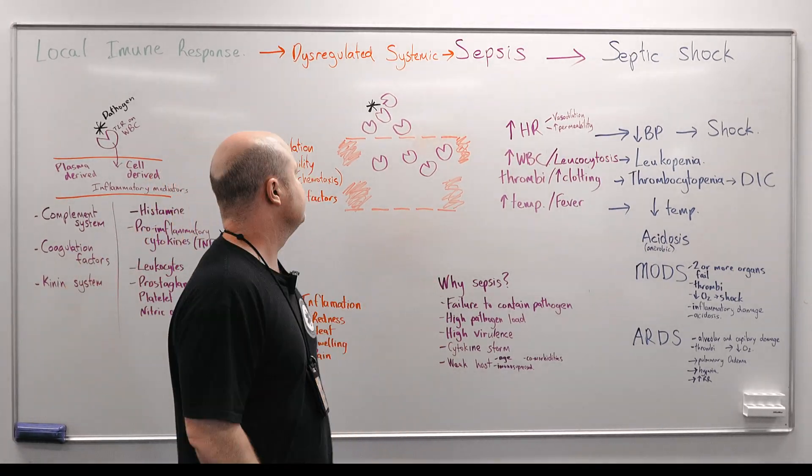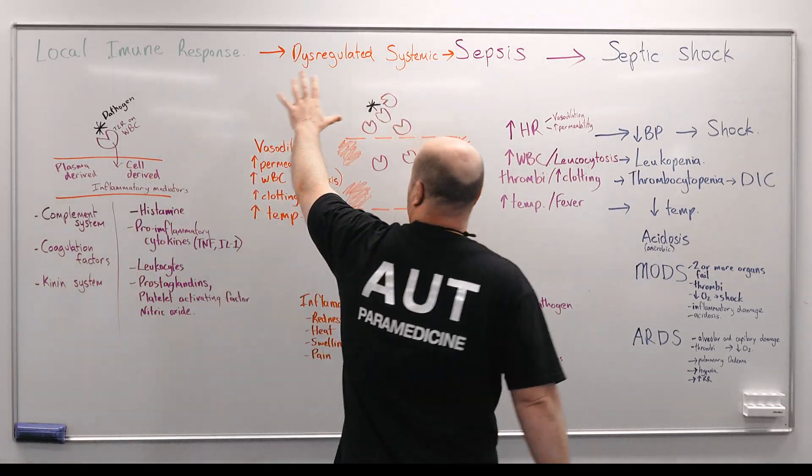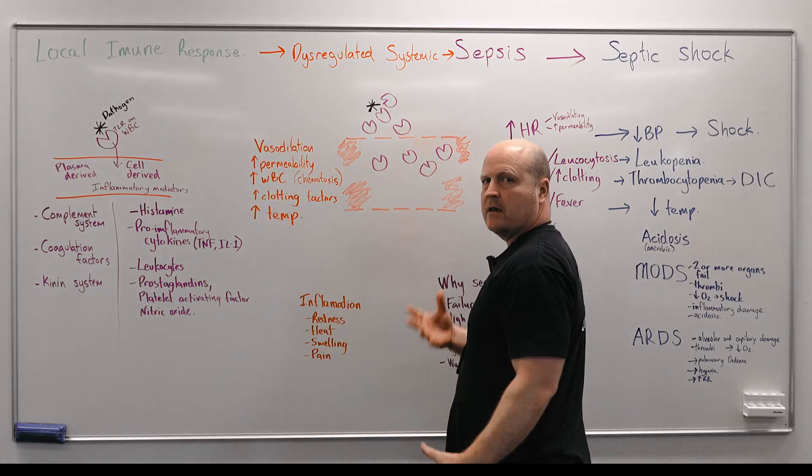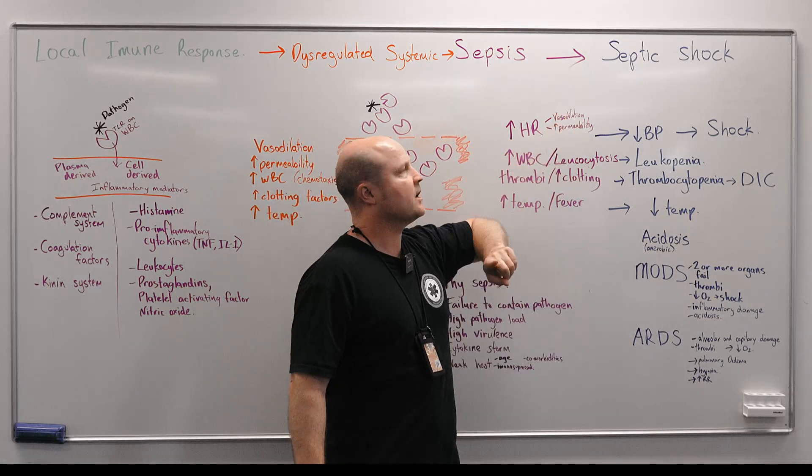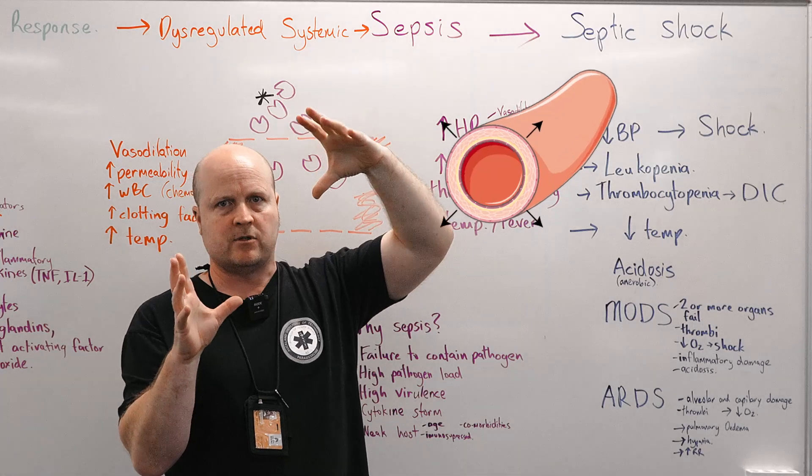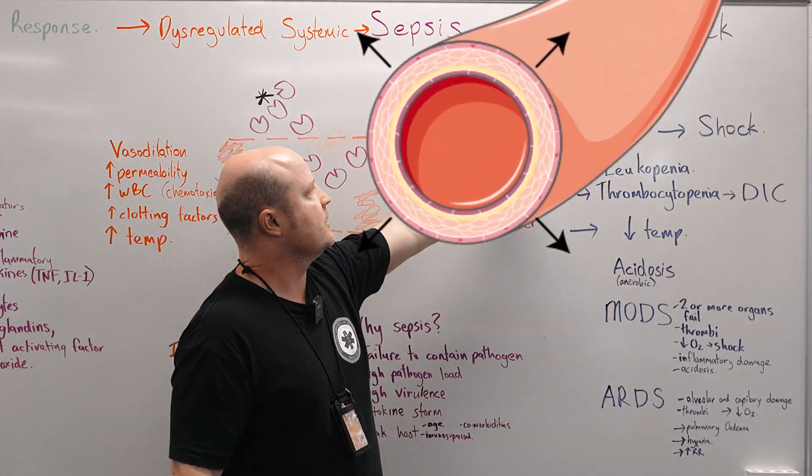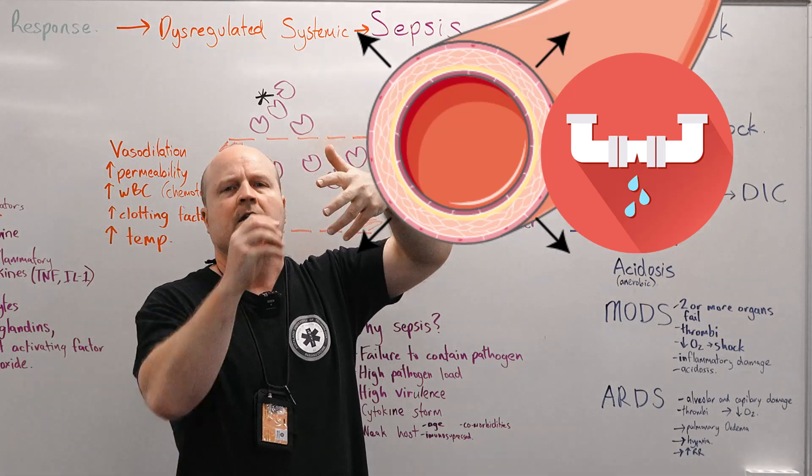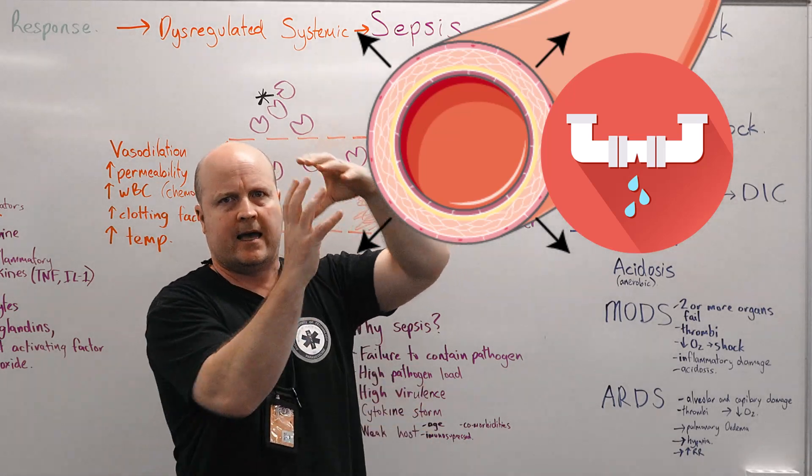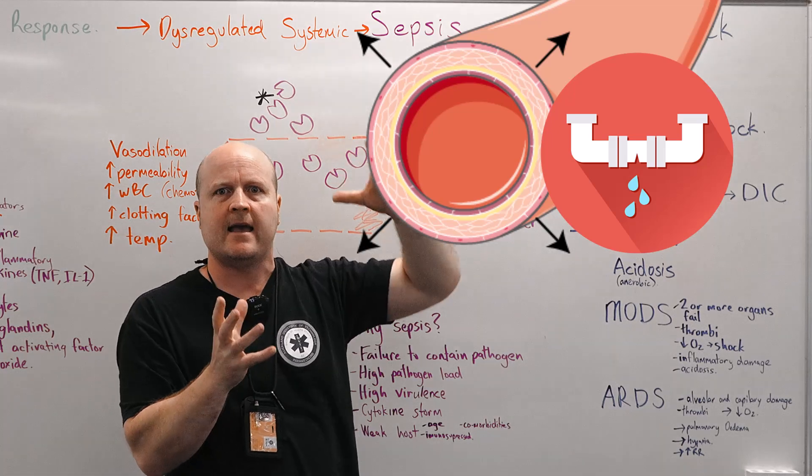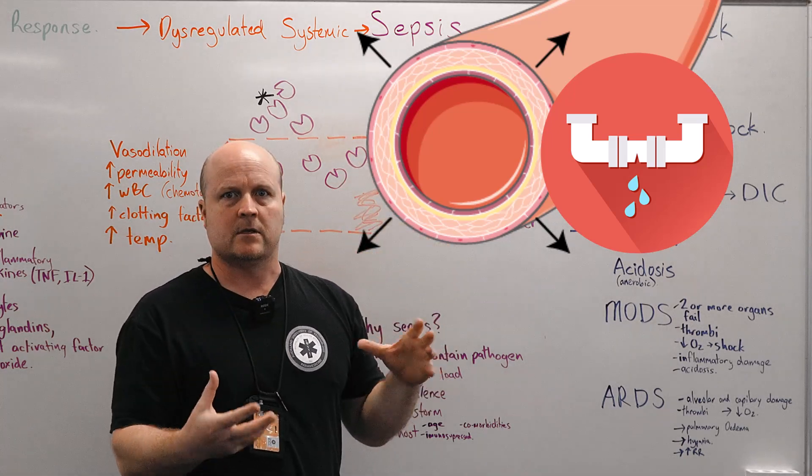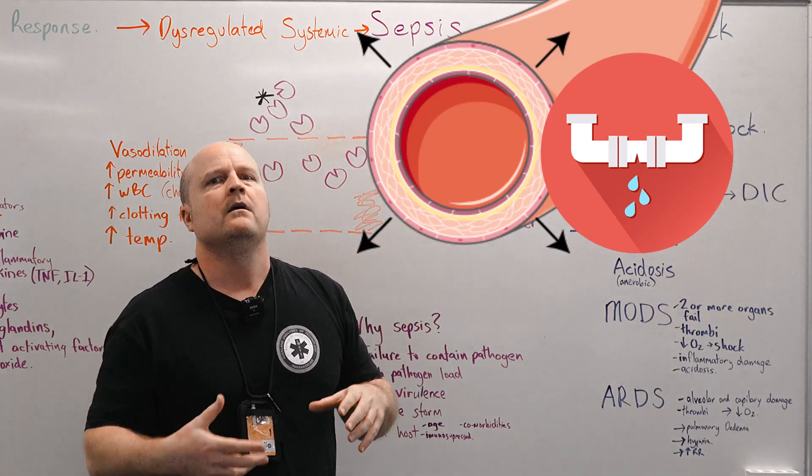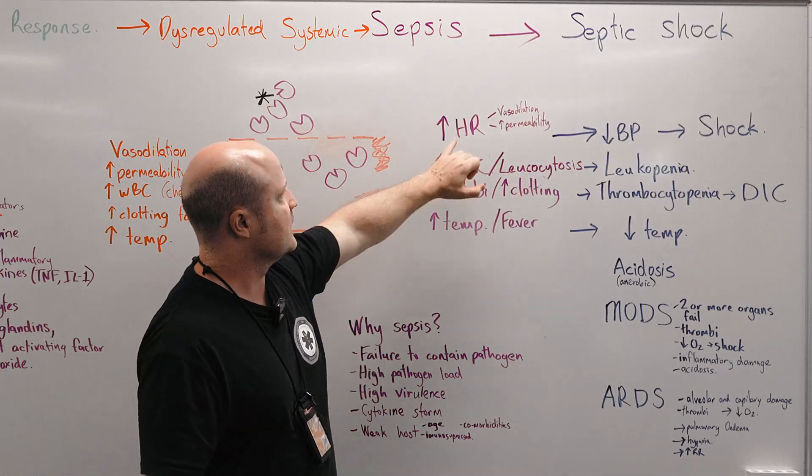Okay so what's going to happen? So if we get this local response everywhere, too much vasodilation, it's going to make the pipes too big everywhere and then increase capillary permeability. Our pipes get leaky. If we lose blood volume and our pipes are too big, now we're going to struggle to maintain our blood pressure. So our body to compensate will increase heart rate.